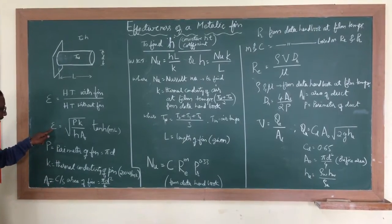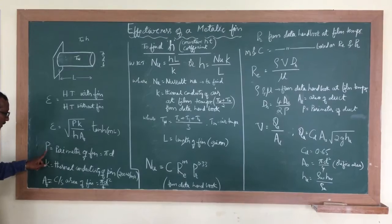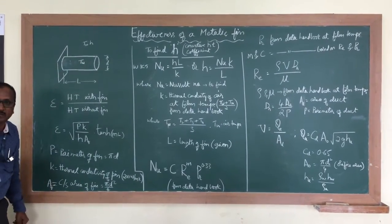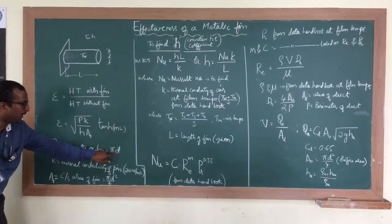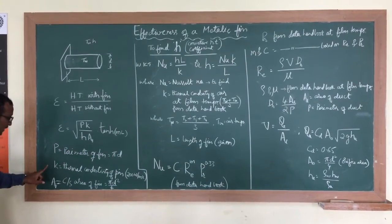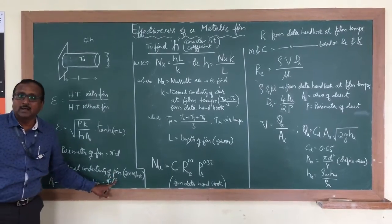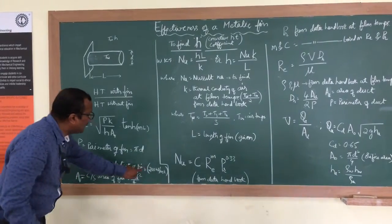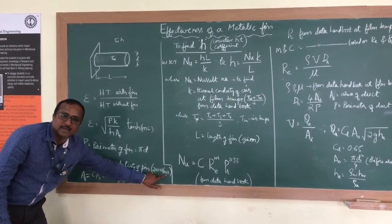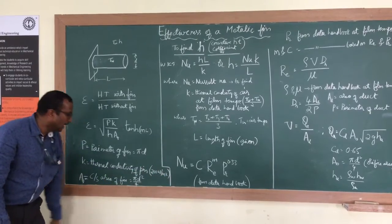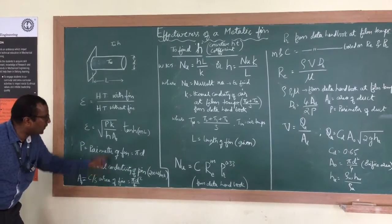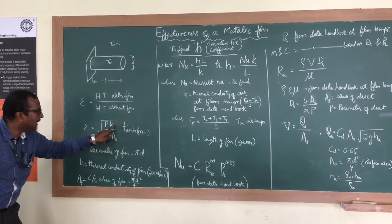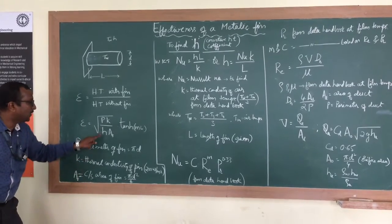Effectiveness involves root of P·K over H, where P is the perimeter of the pin fin. The diameter of the pin fin is given in the experiment, and using π·D we find the perimeter. K is the thermal conductivity of the metallic pin fin — we have taken an aluminium pin, so K is 200 watts per meter-kelvin. That is a fixed value for aluminium. The area of the pin is also given: π·D²/4.